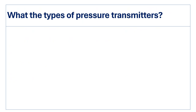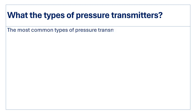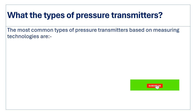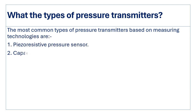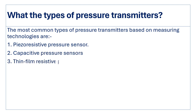What are the types of pressure transmitters? The most common types based on measuring technologies are piezo-resistive pressure sensors, capacitive pressure sensors, thin film resistive pressure sensors, and optical pressure sensors.